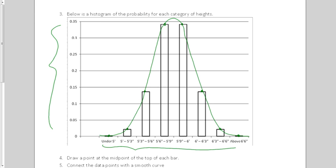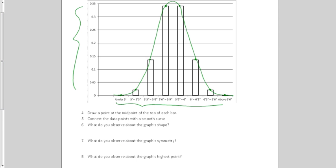Number six says, what do you observe about the graph's shape? Well, if we had to describe this shape, what we usually call it is a bell shape. You've heard that word bell curve before. And that's the shape, the bell curve.